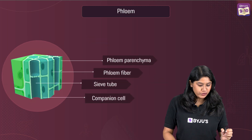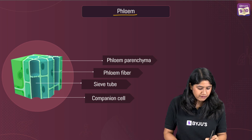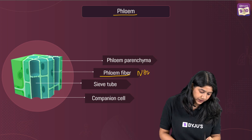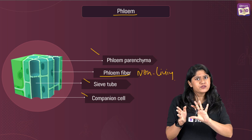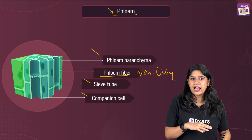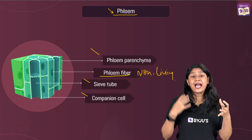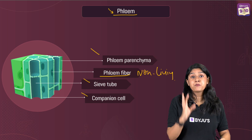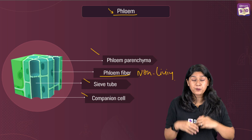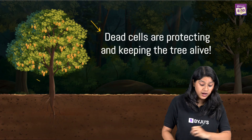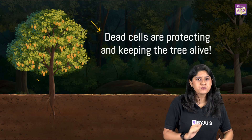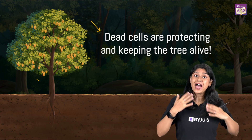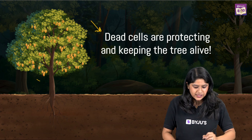Now let's take a look at phloem, which plays a very important role in the translocation of food. In phloem, we have phloem fiber, which is non-living. Phloem parenchyma, sieve tubes, and companion cells are all living. So it's the opposite of what we see in xylem: phloem has more living tissues, while xylem has more non-living tissues. We can clearly see that plants have both living and non-living tissues, and these play a very important role in providing strength and protection to the plant. The dead cells in plants are protecting and keeping the trees alive.